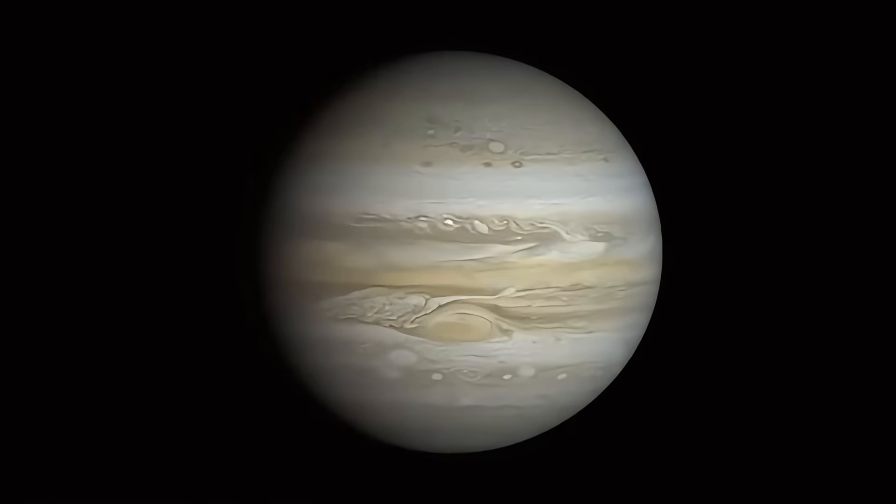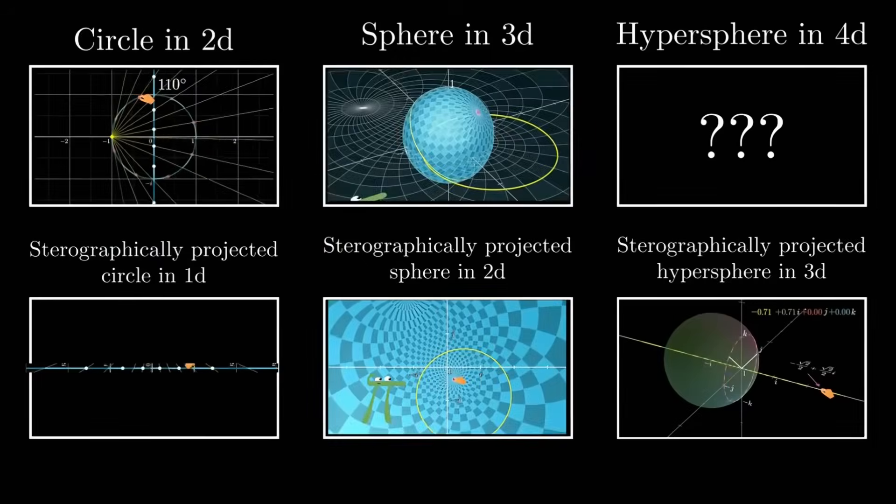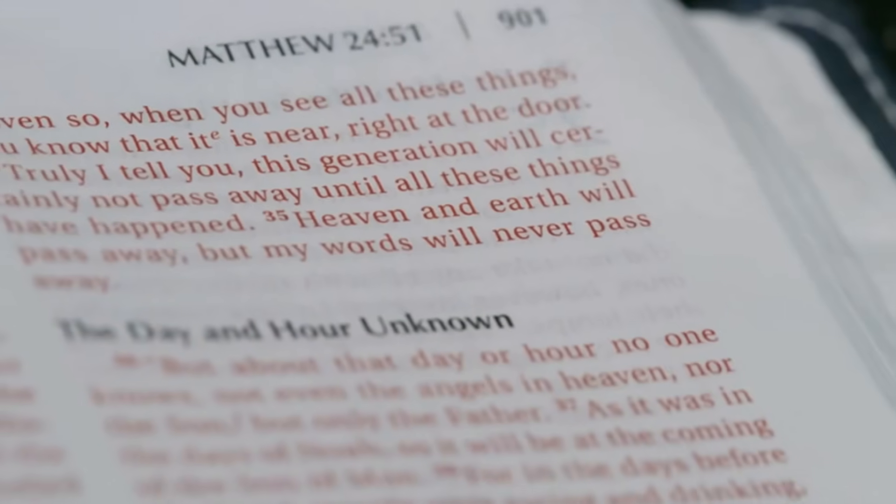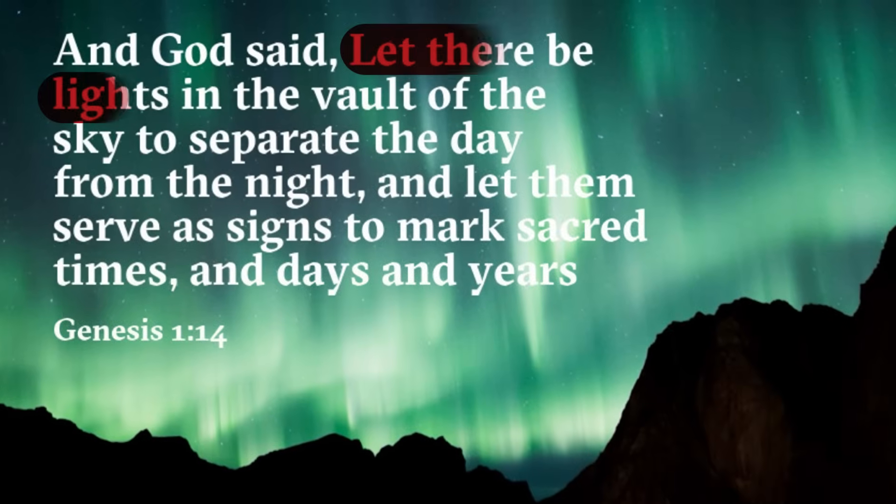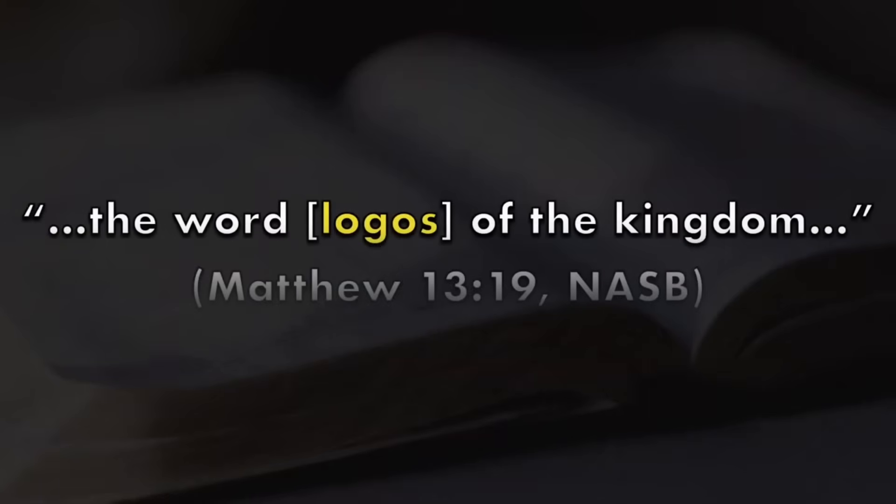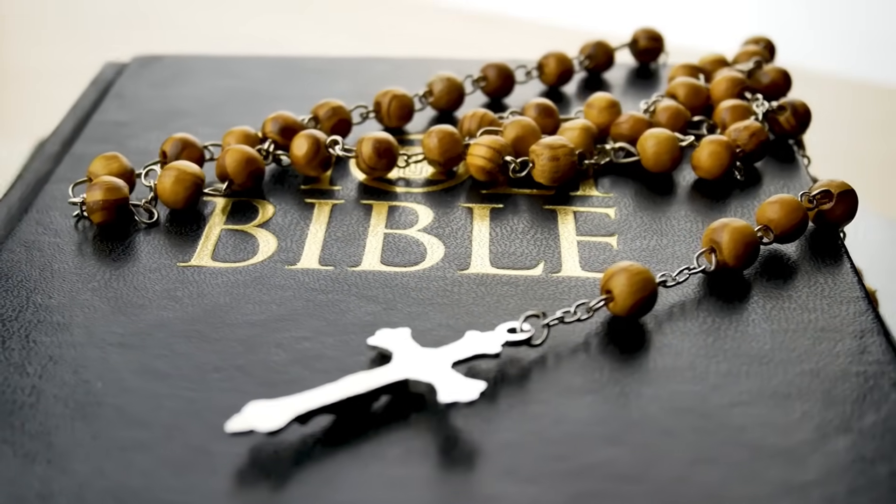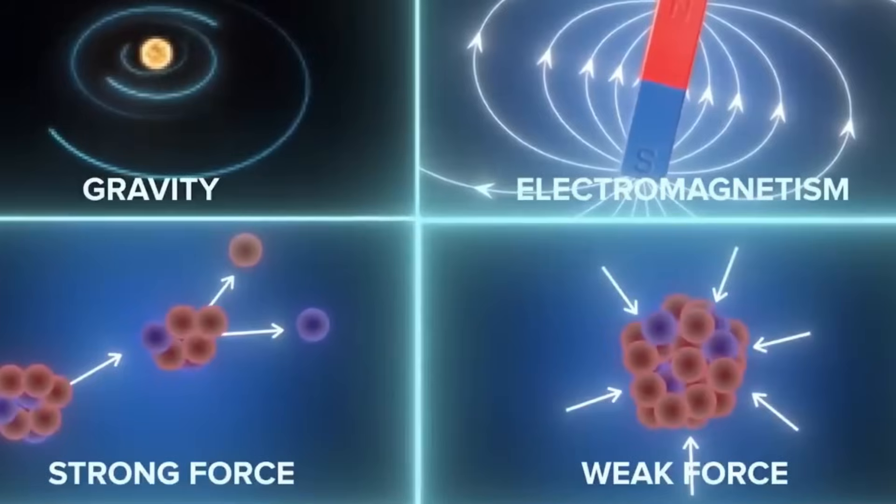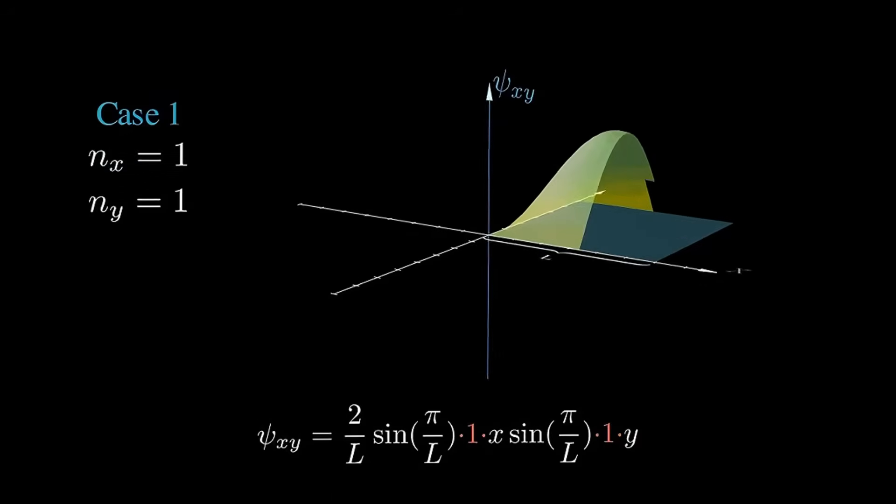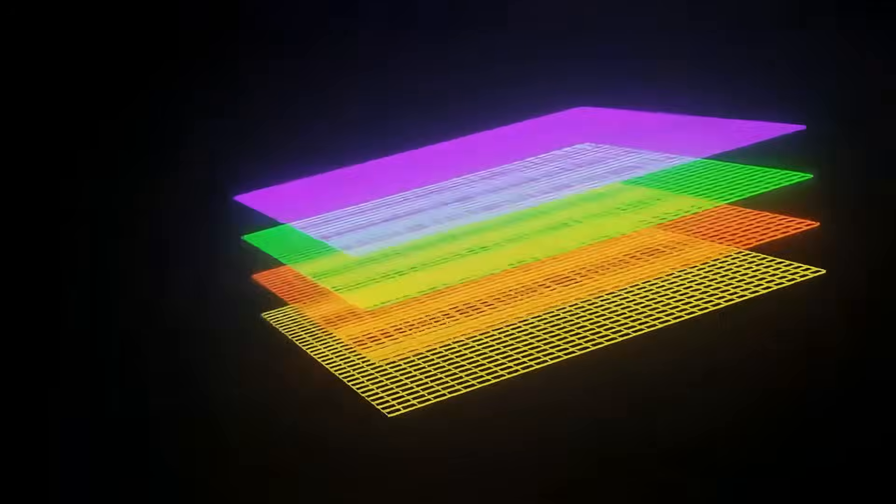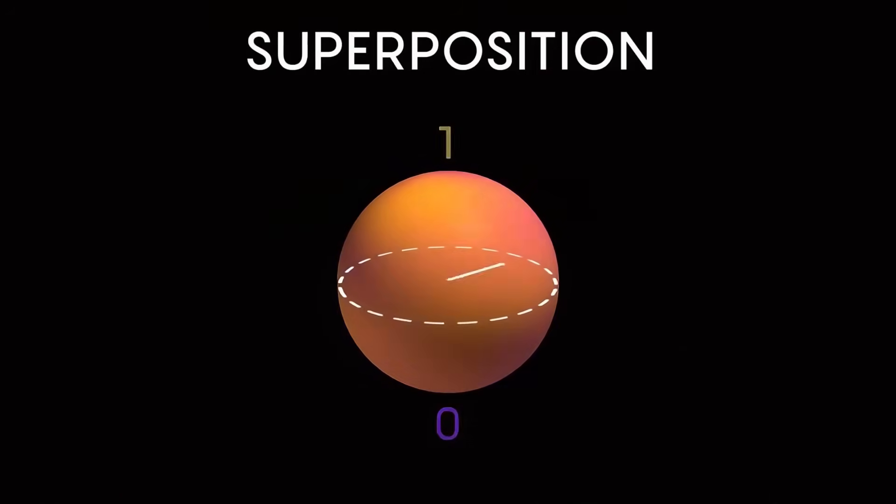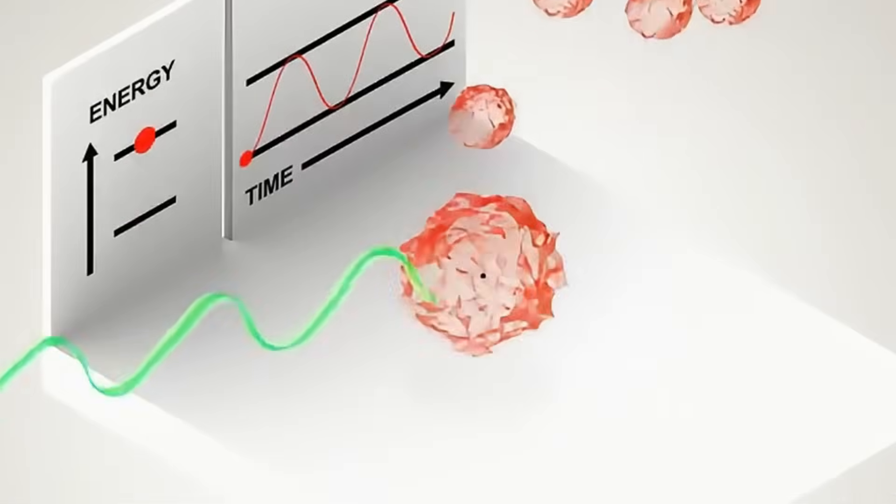Consider the famous double-slit experiment. When unobserved, electrons create an interference pattern, acting like waves. When observed, they behave like particles. Does the act of observation by a conscious being collapse the wave? Early pioneers like Wigner suggested yes, consciousness collapses the wave function. More recent theories, such as decoherence, attribute collapse to interactions with the environment, not mind. But the mystery remains. At its core, quantum reality is participatory. The universe doesn't reveal itself until probed. And when scripture writes of faith shaping the unseen, it sounds less like coincidence and more like an intuitive grasp of quantum strangeness.